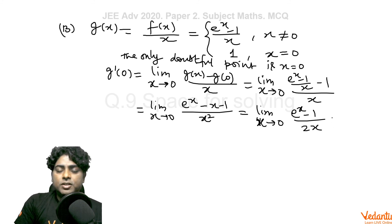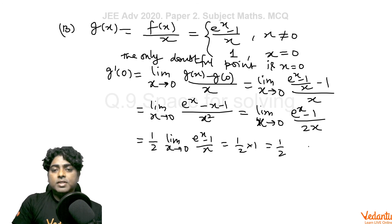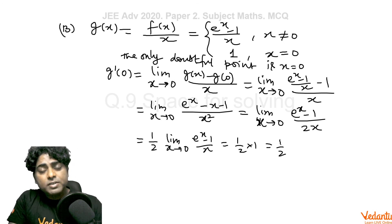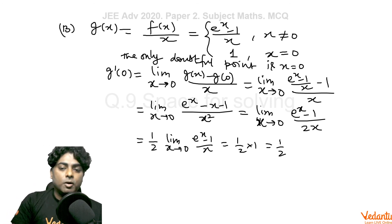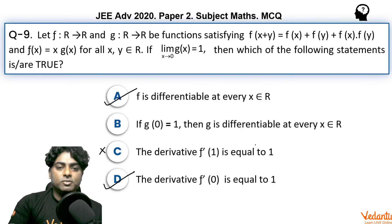Differentiating numerator and denominator because it was 0 by 0 form. And here now we can directly use the standard limit, limit (e^x - 1)/x which is 1. So answer here is half for g'(0). So g actually was differentiable everywhere but only doubtful point was x equal to 0. There we checked the differentiability and it is coming out to be half. So g is differentiable everywhere. So option B is also correct.